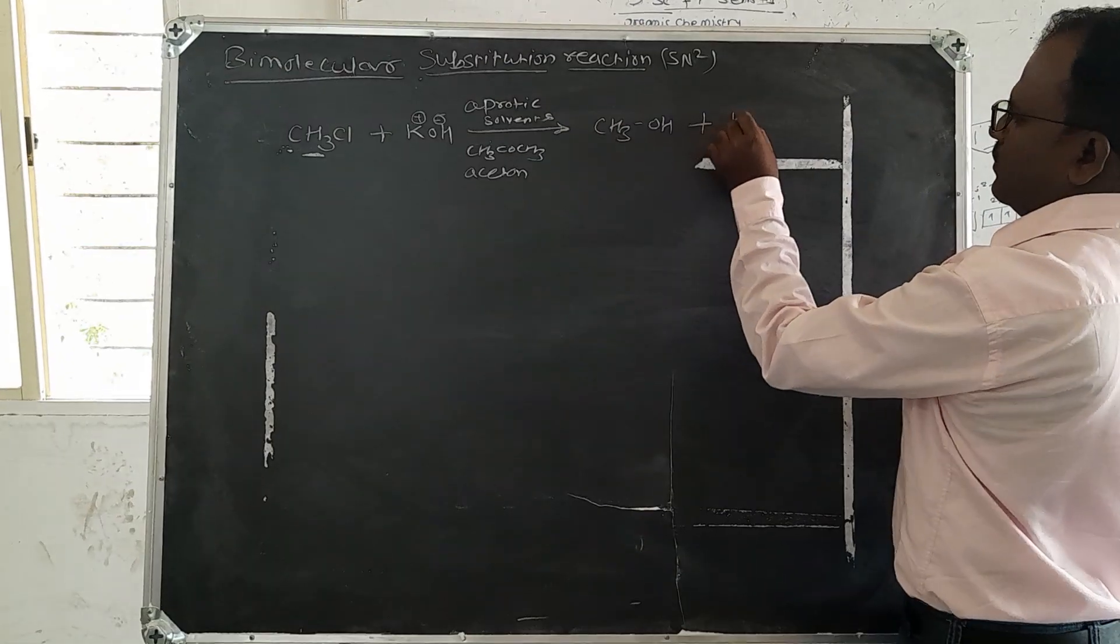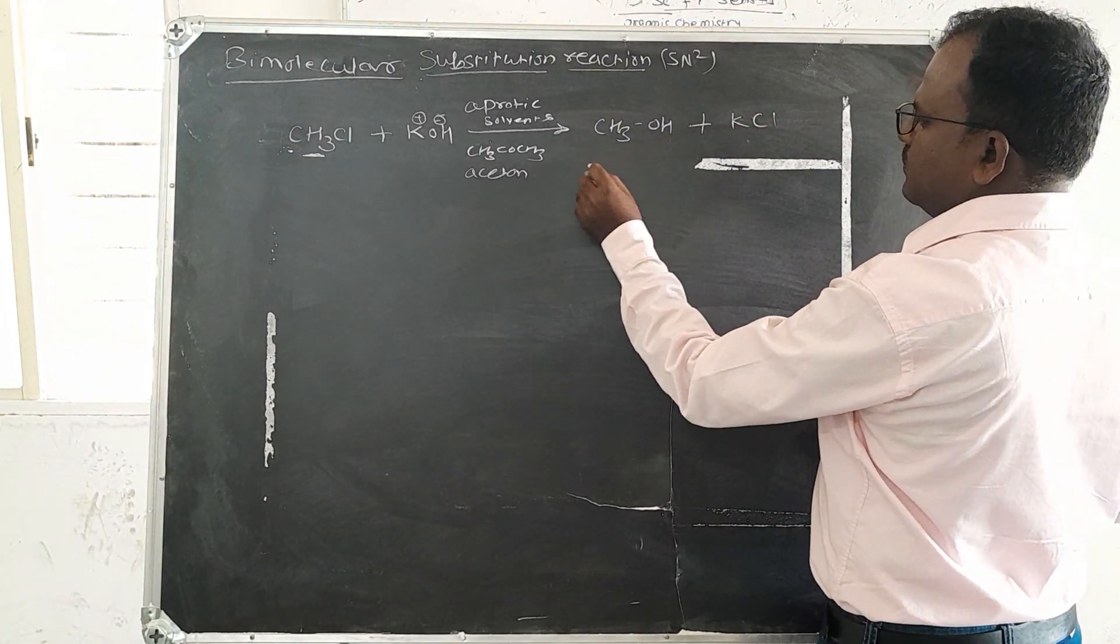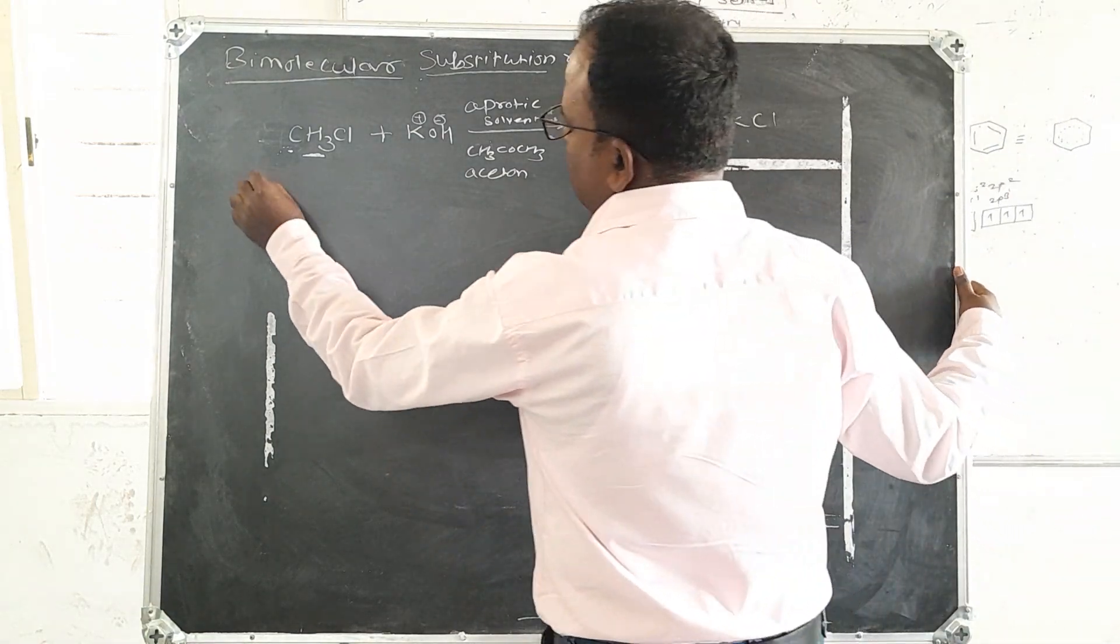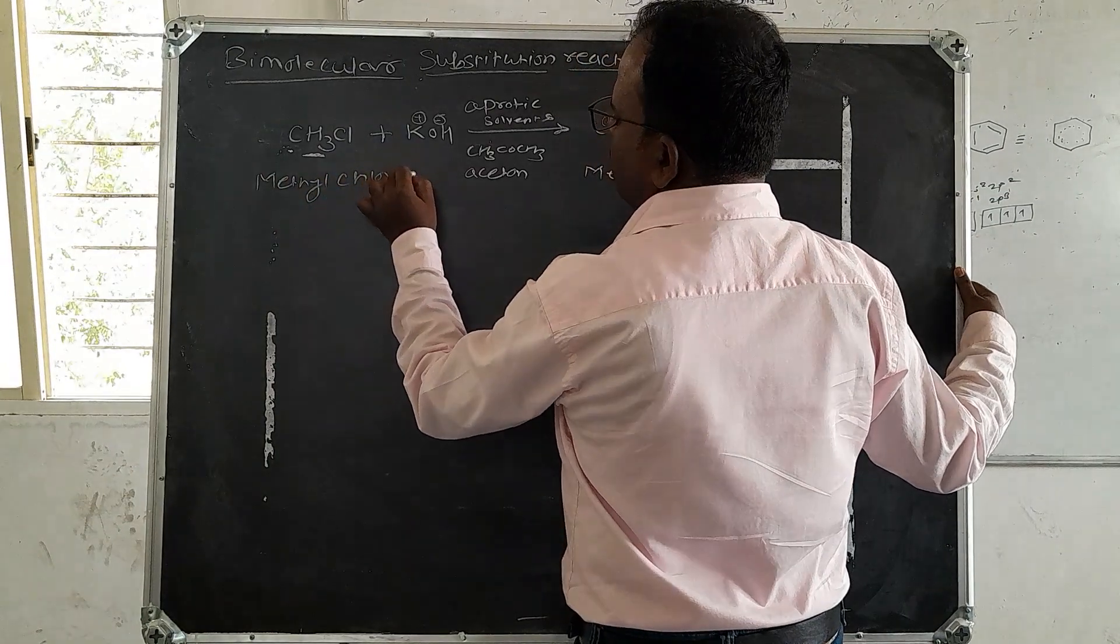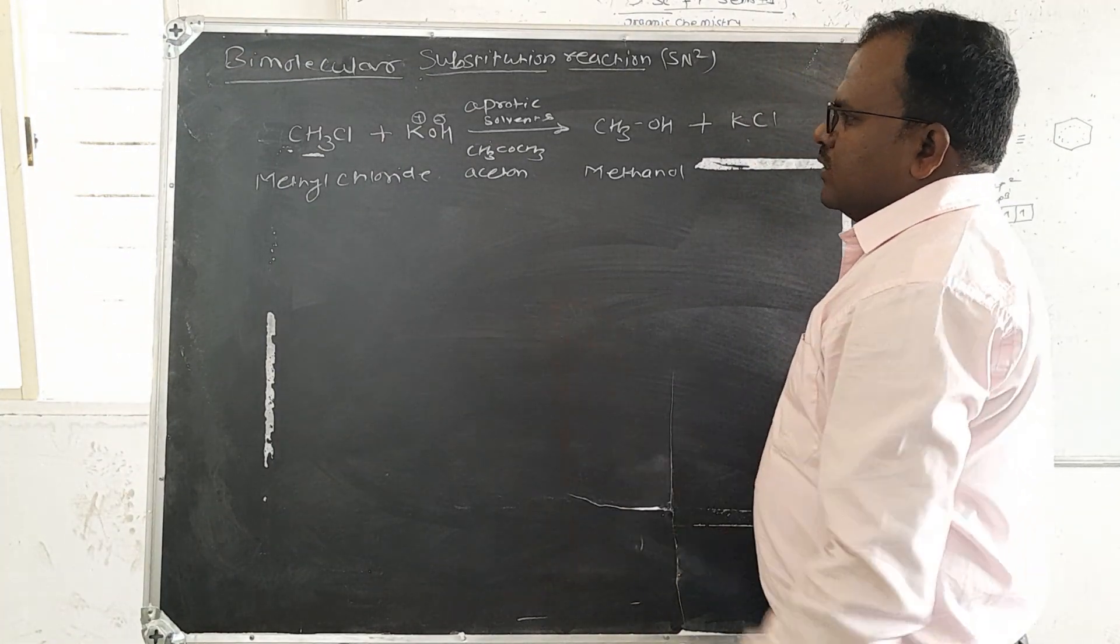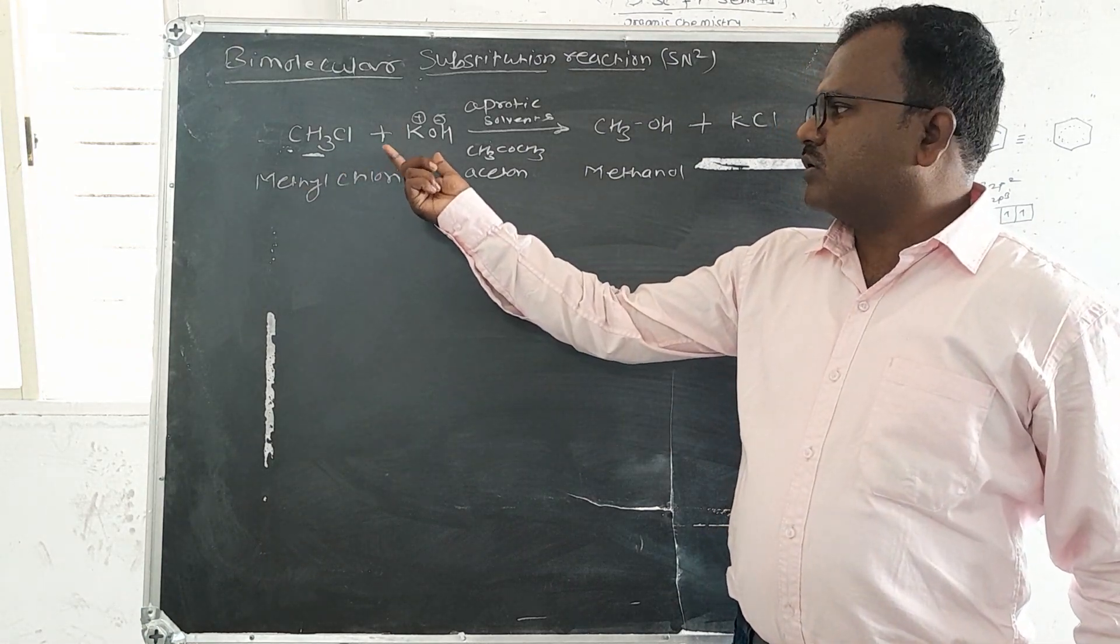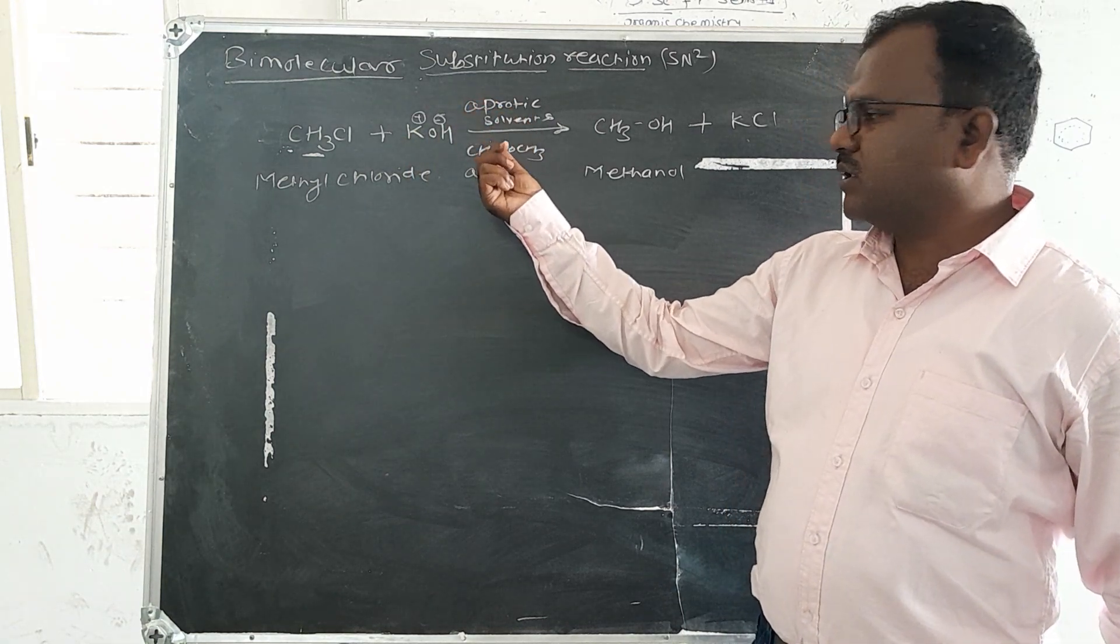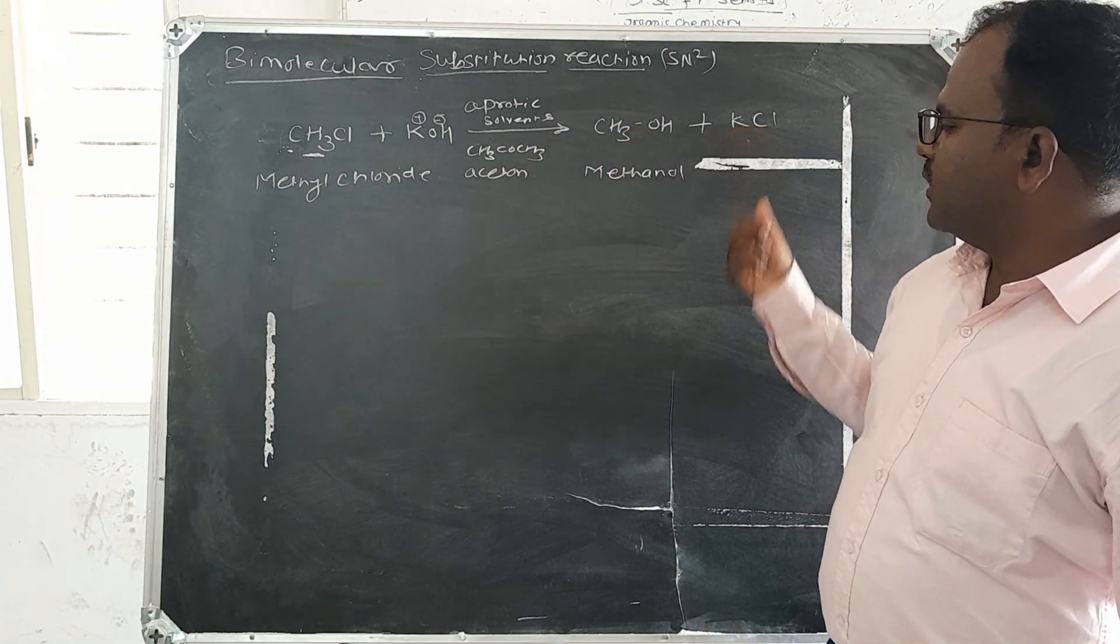Let's take a look at ethyl chloride. This ethyl chloride is reactive with the base, that is the potassium hydroxide in presence of aprotic solvent, that is acetone. Acetone will be for addition of methanol.